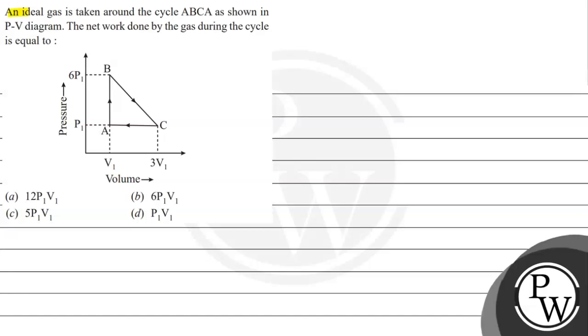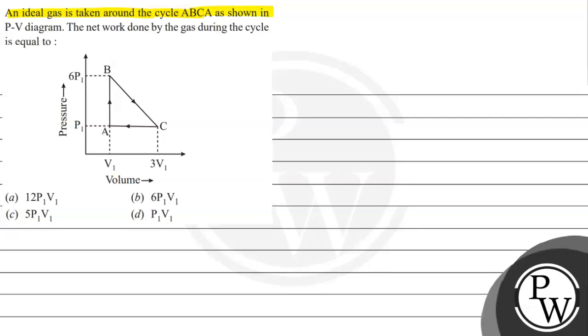Hello guys, let's read this question. An ideal gas is taken around this cycle A, B, C, A as shown in PV diagram. The net work done by the gas during the cycle is equal to. So, this has a graph given to pressure and volume and for which we have to find the net work done. And these are the following options given to us.